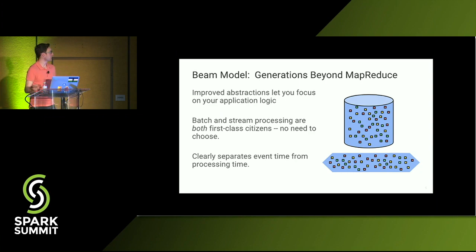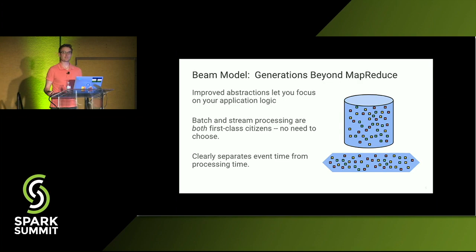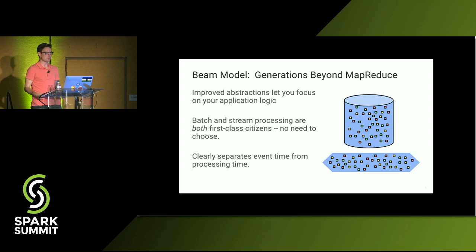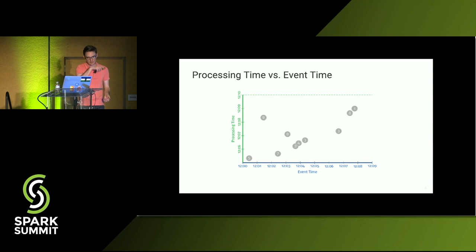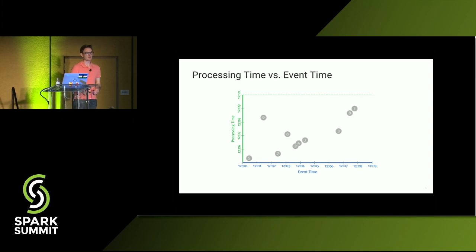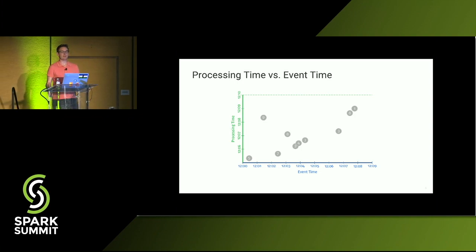So what is Beam? At its core, Beam is a model designed for both batch and stream processing as a first-class use case. You don't have to think about batch or streaming separately — the model is inherently designed from the start to think about both. A really good concept to start with is event time versus processing time. In an ideal case, you process data immediately when it's generated, but that's usually not how reality works out.